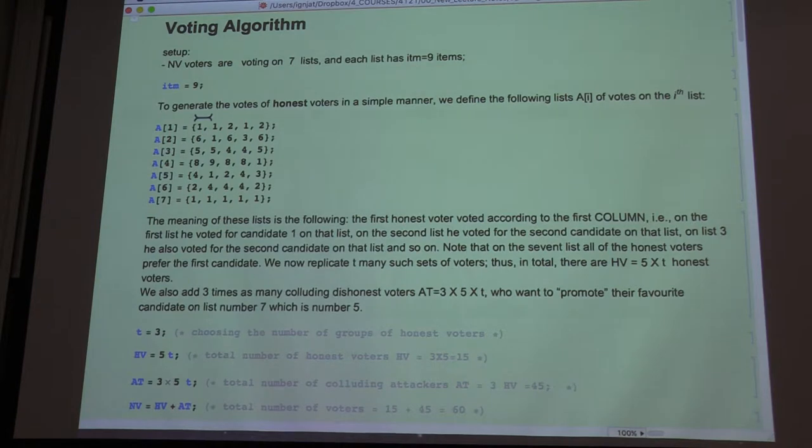For example, here the first candidate voted on list one for the first candidate and for candidate number six on the second list, candidate number five on the third list and so forth. So here we have only five voters.